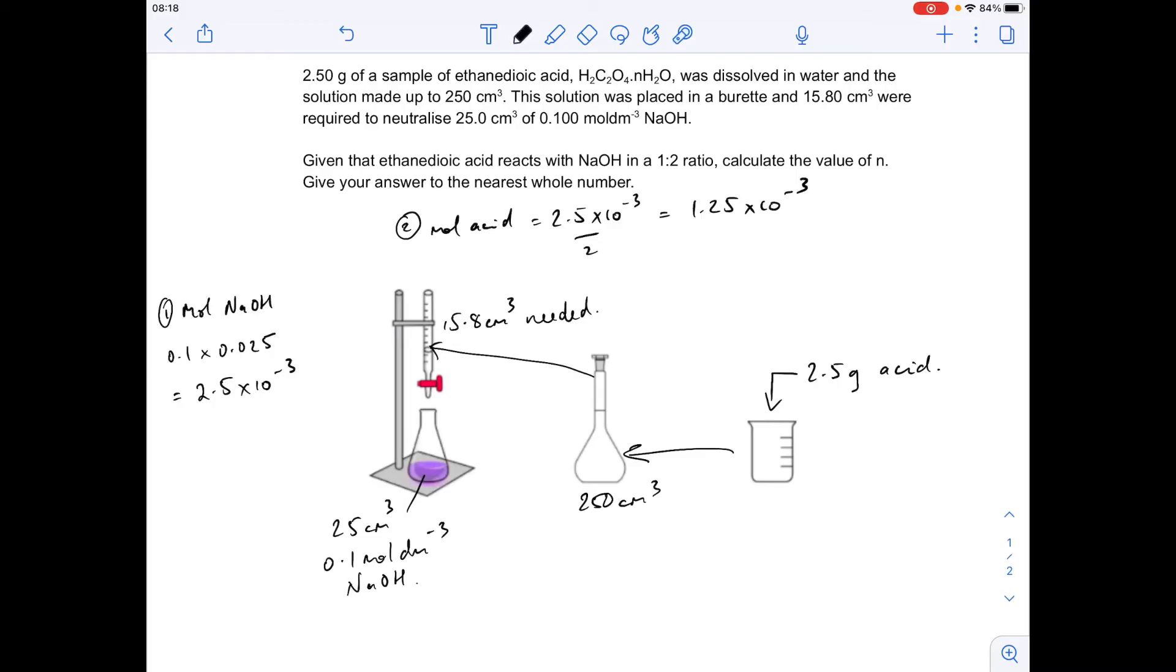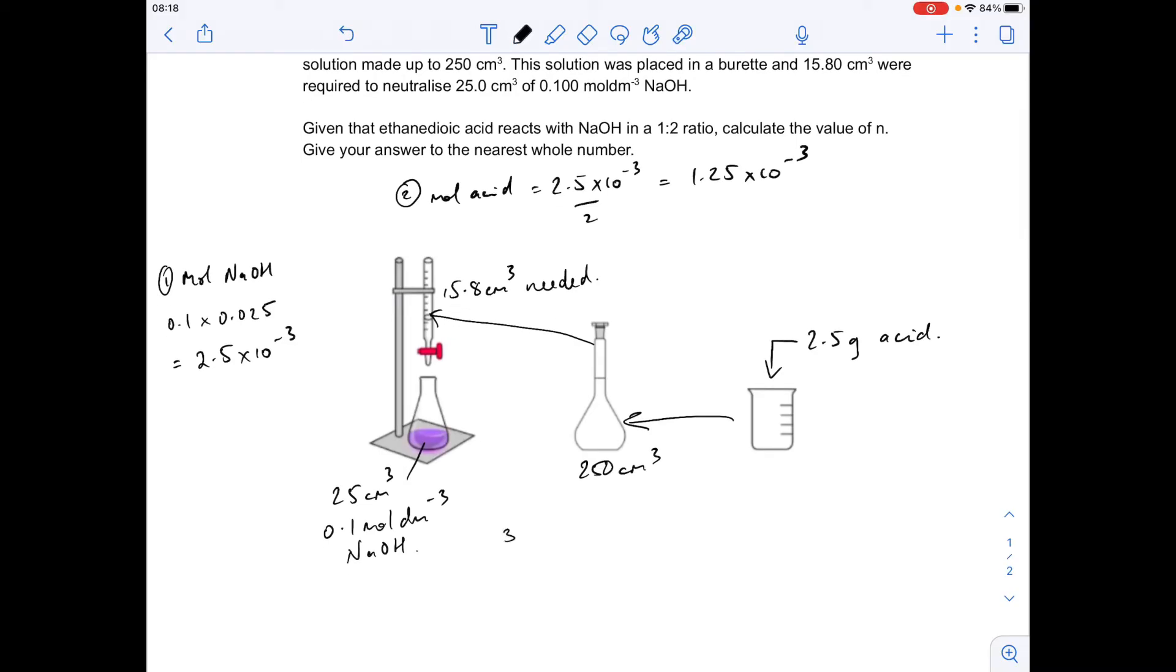So the third thing we're going to do is we're going to divide the moles that we've got. So we know that there's 1.25 × 10⁻³ moles in 15.8 cm³. So if we divide by 15.8, we find out how many moles are in 1 cm³, and then if we multiply by the 250 cm³ for the solution, that'll scale it up to how many moles must have been in there, and therefore in there.